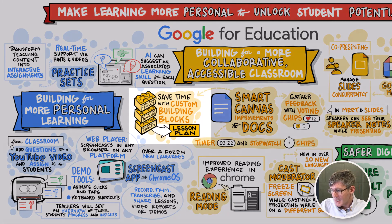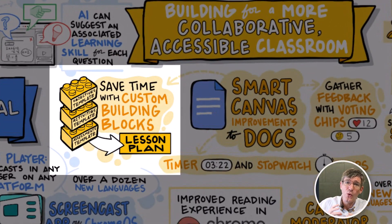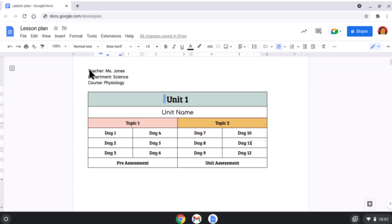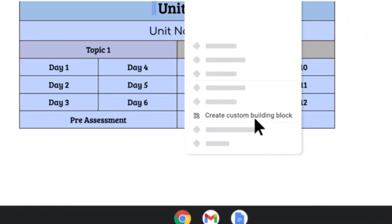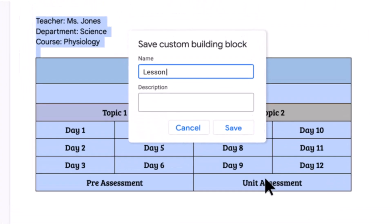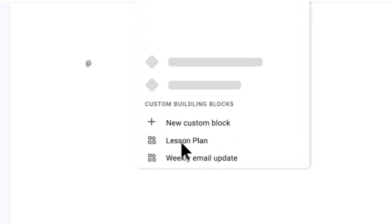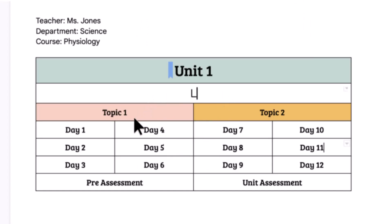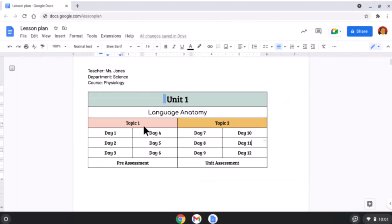Back to the image — custom building blocks. We've all been using chips and building blocks within Google Docs to speed up our workflow, and now custom building blocks are coming. You can create a template for a lesson plan and save it as a custom building block. Moving forward, you can simply type '@lesson plan' and automatically that template will pop into your Google Docs. This is a huge time saver, especially for teams using the same formats over and over again.